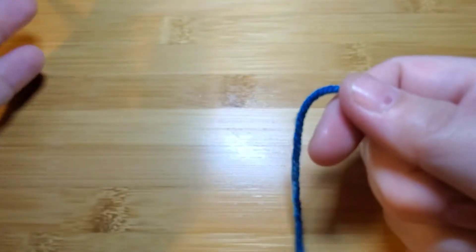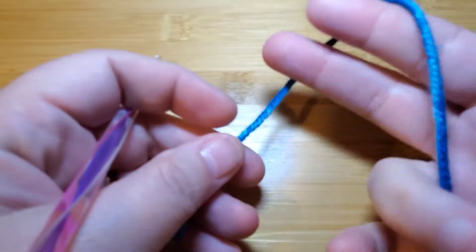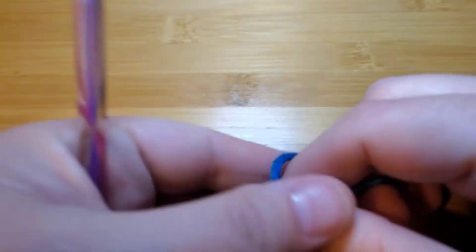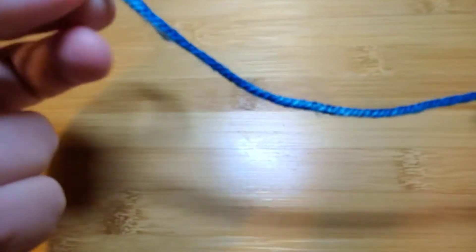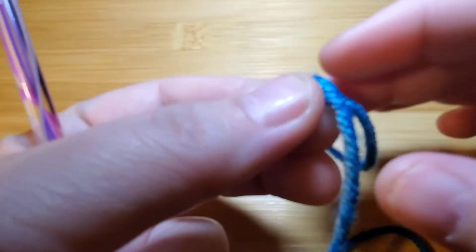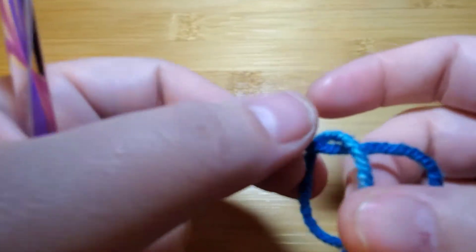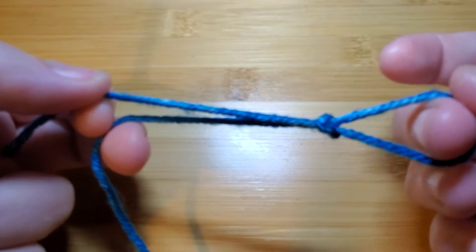First you start with a slip knot. I make sure the end is pointed out toward my left hand, and I take the string that is going to the rest of the skein and bring it up under and through the loop just like that. Tighten it down.